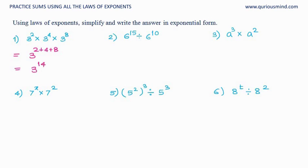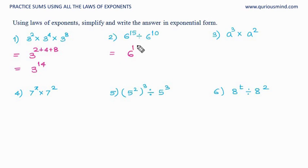Here again the base is same, which means like base rule applies — the base in the answer remains same. It is division, so the powers get subtracted: 15 minus 10, and the answer would be 6 raised to 5.